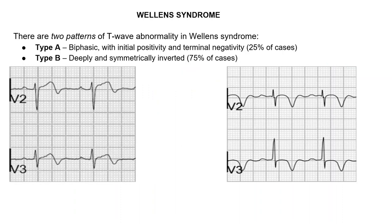Wellens syndrome — I have already discussed this. It is seen in acute LAD occlusion. There are two types: Type A is a biphasic pattern, and Type B is deep symmetrical inverted T waves.